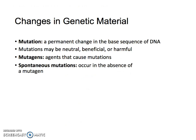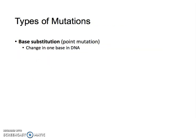Changes in genetic material is a huge area. A mutation is a permanent change — it made it past the proofreading and is now permanent. Mutations most commonly are neutral, more likely are harmful, and sometimes beneficial. Mutagens are agents that can cause mutations, and you work with a few mutagens in lab. Spontaneous mutations occur in the absence of a mutagen. A type of mutation is a point mutation — base substitution, where one base that was a T is now a G.